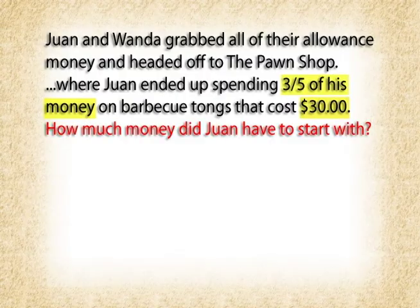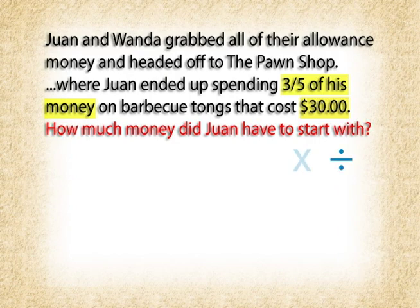What word clues do you see, Ms. Waves? Well, "of" is a multiplication clue word. But I don't think we can just multiply three-fifths times thirty dollars to get the right answer. Do you think we can still make use of that clue word somehow? Indeed we can, Ms. Waves. However, since they're only asking us one question, and that question has to do with a fraction, we know we're going to both divide and multiply.